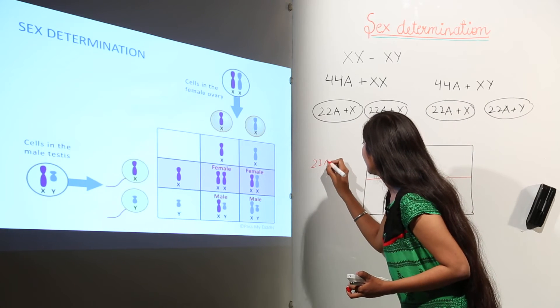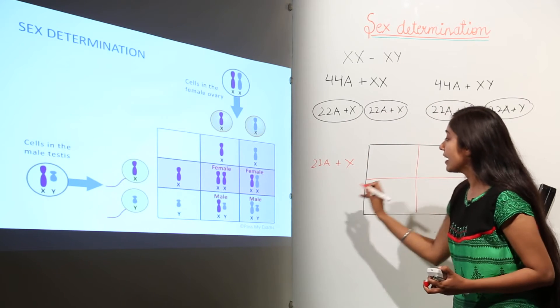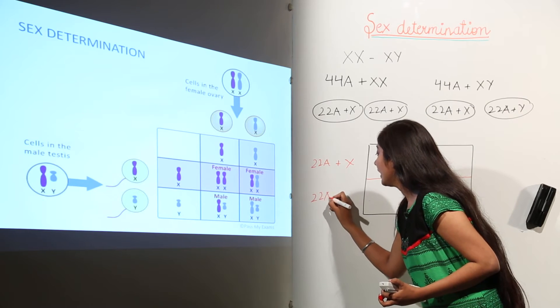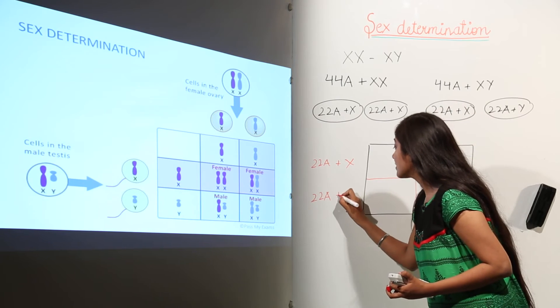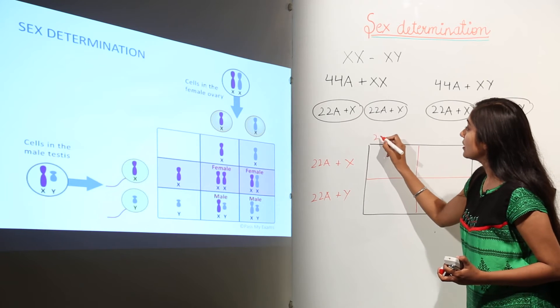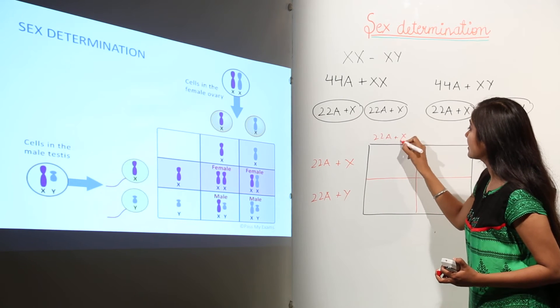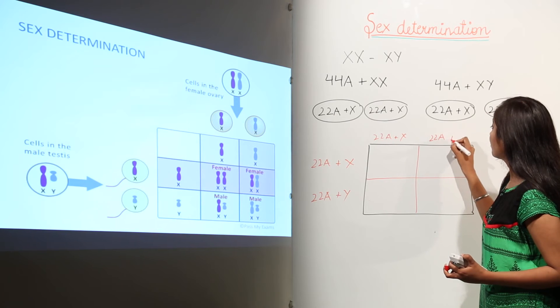So we have 22A plus X and 22A, A is for autosomes, plus Y. In case of females, we have 22A plus X and 22A plus X.